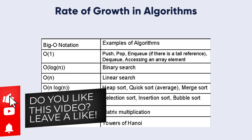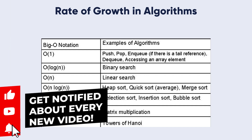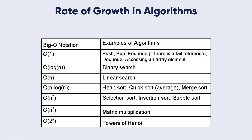We will start from O(1) — pushing, popping, enqueue, dequeue, or accessing an array element will cost us O(1). Then O(log n), like in binary search. O(n) for linear search. O(n log n) for heap sort, quick sort, and merge sort. O(n²) for selection sort, insertion sort, and bubble sort. O(n³) for matrix multiplication. And O(2ⁿ) for the Towers of Hanoi. We will clarify everything in the next video — the key takeaway is that we take the highest degree in the function as the rate of growth.